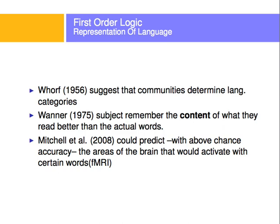The representation of language is something we don't fully know yet how it's done. We know that some communities determine different language categories, so for the same item, depending on the community, it can be in different categories, and some communities define categories that other communities don't. Also, since 1975 we know that people remember the content of what they read better than the actual words — they're storing things in abstract categories, not every single word.